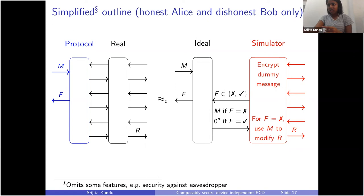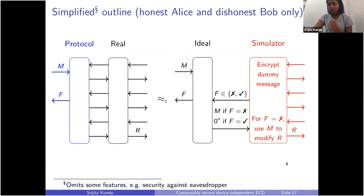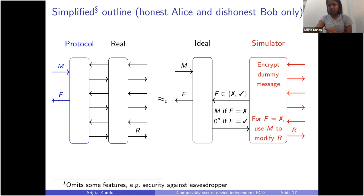This is done similarly to the composable security proof for QKD. Because in the ideal functionality the simulator does not receive the actual ciphertext, it's going to simulate the real protocol by encrypting one dummy message — say 0^n. At the end, when the message is potentially revealed to Bob, the simulator needs to use the message to modify the randomness that was going to be revealed to him in the real protocol. In order to do this, before the randomness is revealed to Bob, the quantum states on his side in the real protocol need to be completely indistinguishable between the actual message and the random message cases.